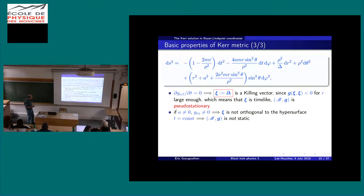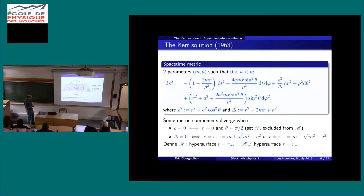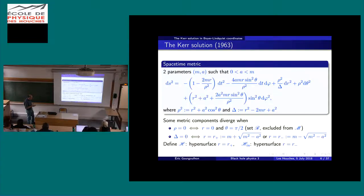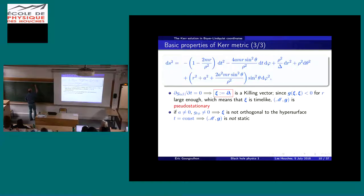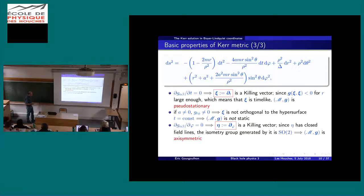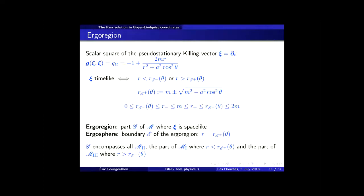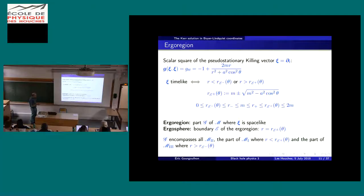With respect to the previously introduced quantities r-minus and r-plus, which do not depend on theta, r-plus is given by m plus the square root of m squared minus a squared. The r_e-minus of theta is below r-minus, but positive. The other root is above r-plus, and always smaller than 2m.